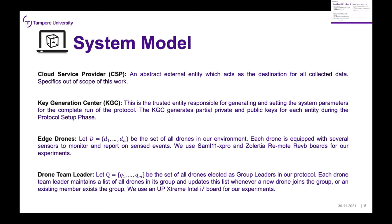The system model is quite simple. We consider a CSP as an abstract entity which acts as a destination for all collected data; the specifics of the CSP are out of scope. The Key Generation Center (KGC) is a trusted entity responsible for generating and setting system parameters. The KGC also generates partial private and public keys for each entity during the protocol setup phase. For the drones, we consider resource-constrained devices: the SAM-11 X-Pro and the Olesha Remote Rev-B boards.